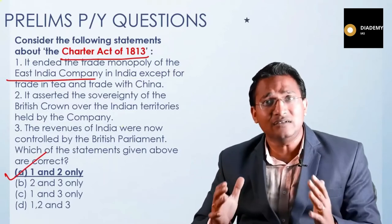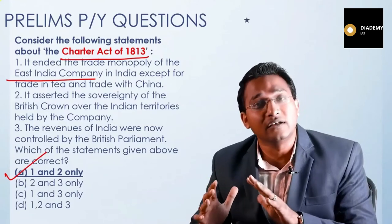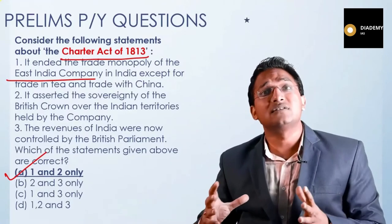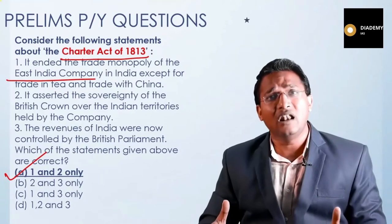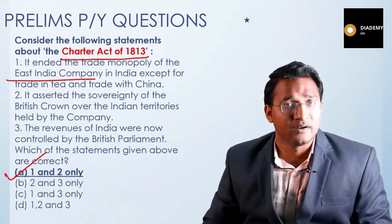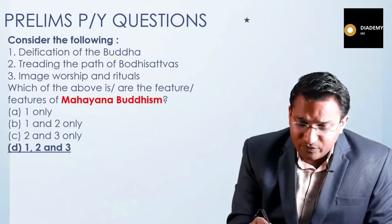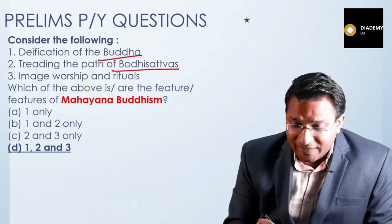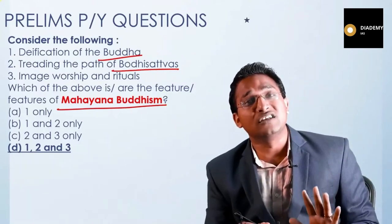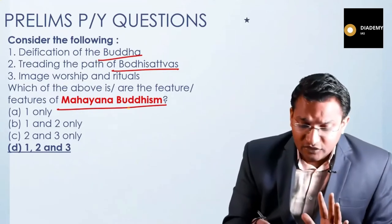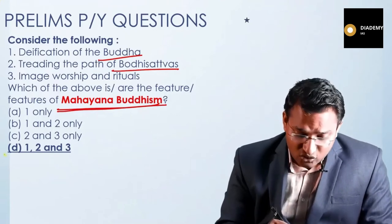If you cover the syllabus in a thorough manner, the questions become easy. They are not purely one-liners but if you read the syllabus from the books in a disciplined manner, they become manageable. The next question asks: consider the following — deification of the Buddha, treading the path of Bodhisattvas, image worship and ritual — which of these are features of Mahayana Buddhism? As mentioned, almost every year you will find a question from Buddhism or Jainism. This Mahayana Buddhism question is very easy if you know the details.